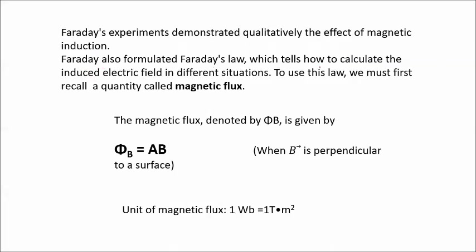Faraday formulated Faraday's law, which tells how to calculate the induced electric field in different situations. To use this law, we must first recall the quantity called magnetic flux. Magnetic flux, denoted by Φ_B, is given by: Φ_B = A × B, where A is the surface area and B is the magnetic field. The unit of magnetic flux is the Weber, where one Weber equals one Tesla times square meter.